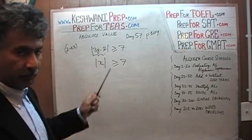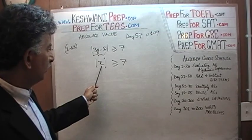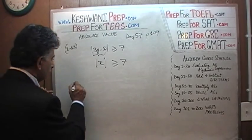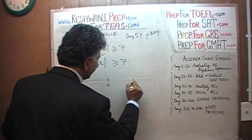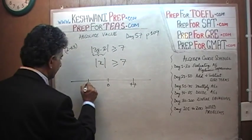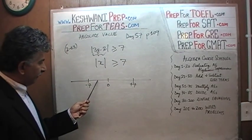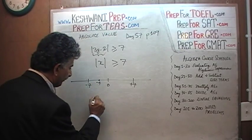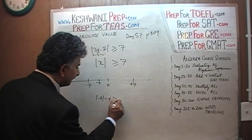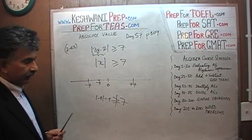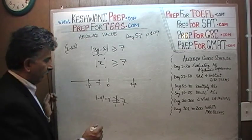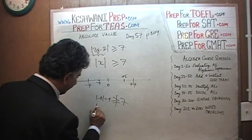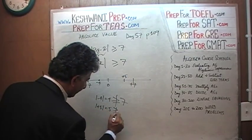So what does it mean when we say the absolute value of some number x is greater than or equal to 7? Let's show it on the number line. Here is our 0, here is positive 7, and here is negative 7. If the number falls at, say, negative 4, the absolute value of negative 4 is 4, and 4 is not greater than or equal to 7. Similarly, if it falls at positive 5, the absolute value of positive 5 is 5, and 5 is not greater than or equal to 7.